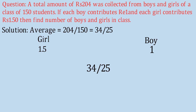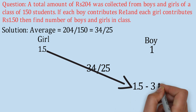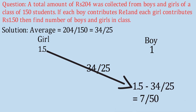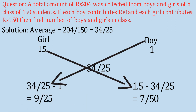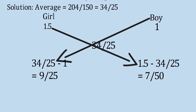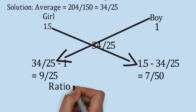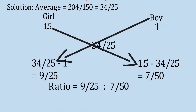Using the rule of alligation we find the ratio of girls to boys. For boys: 1.5 − 34/25 = 7/50. For girls: 34/25 − 1 = 9/25. So the ratio of girls to boys = 9/25 : 7/50, which simplifies to 18:7.